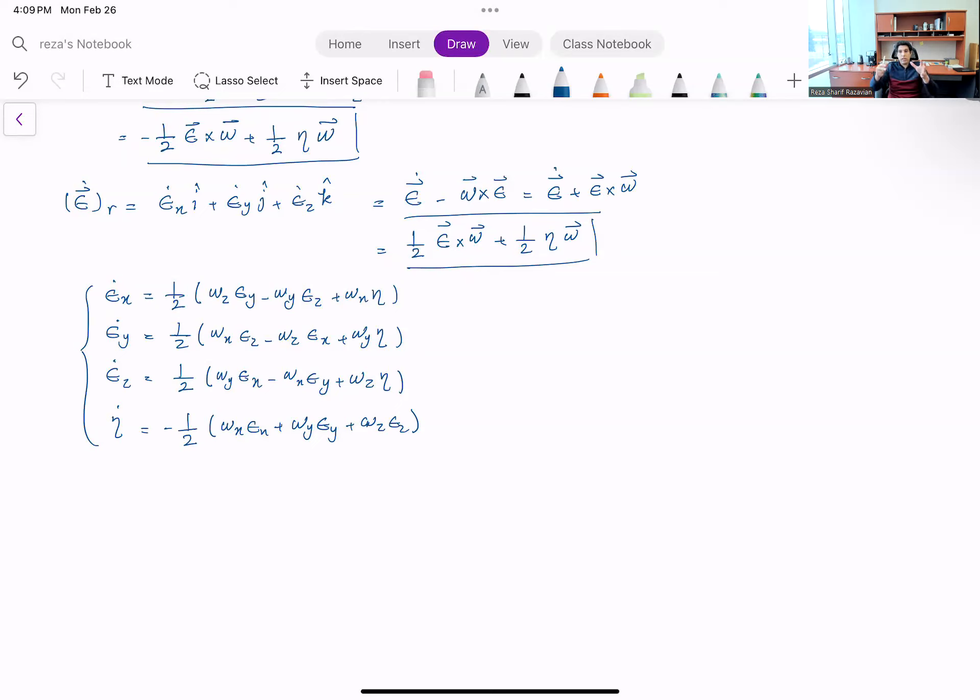And what you can do is start from a kind of a starting frame and start integrating these equations. So at every time step we have these omegas and I know my current values of epsilon x, y, z, and I can find the derivatives and just increment them numerically, essentially integrate these equations to see where I land next time.